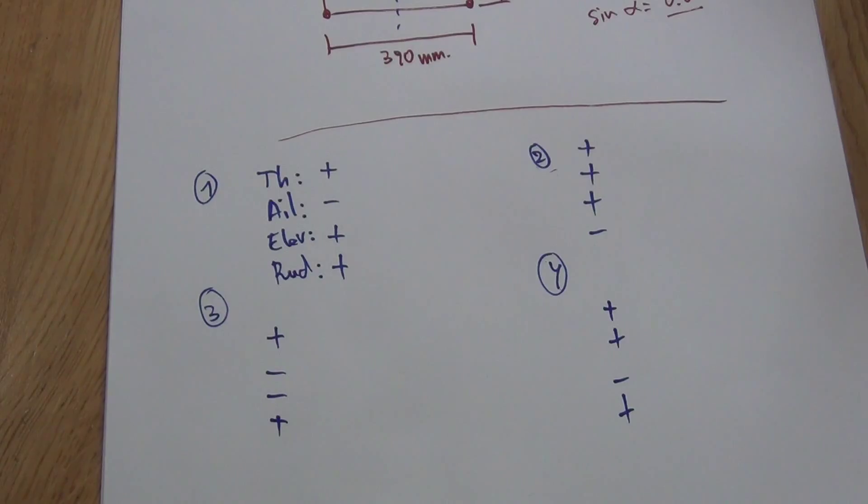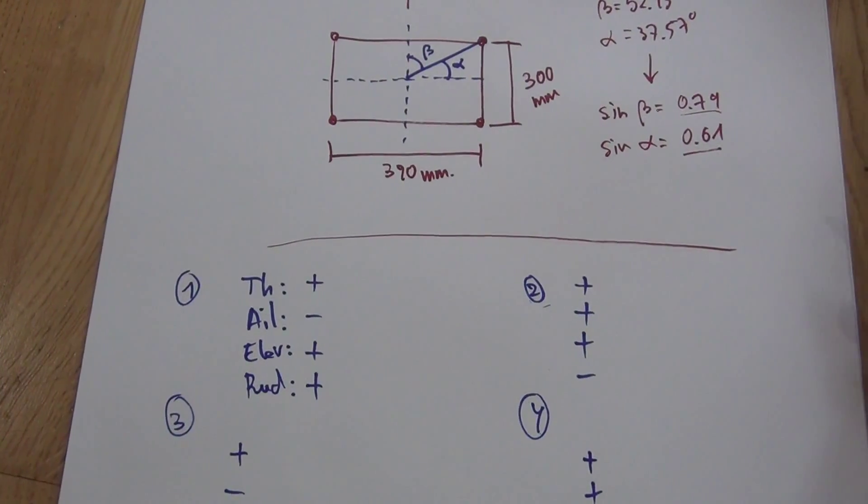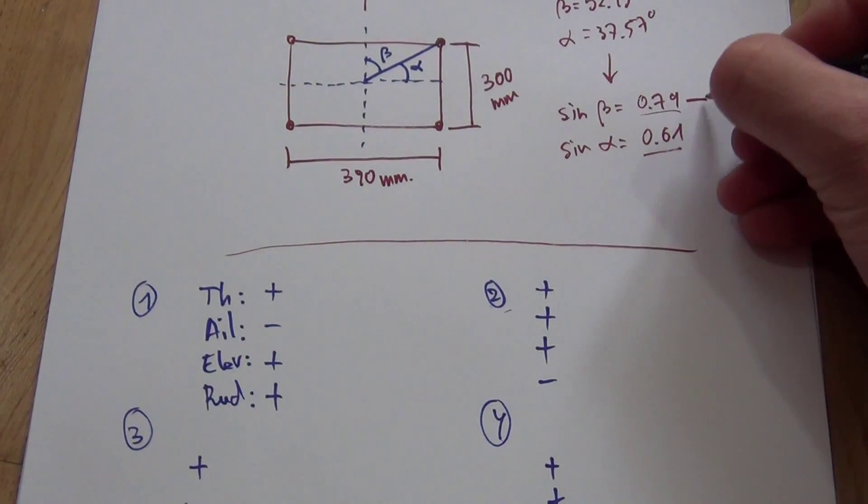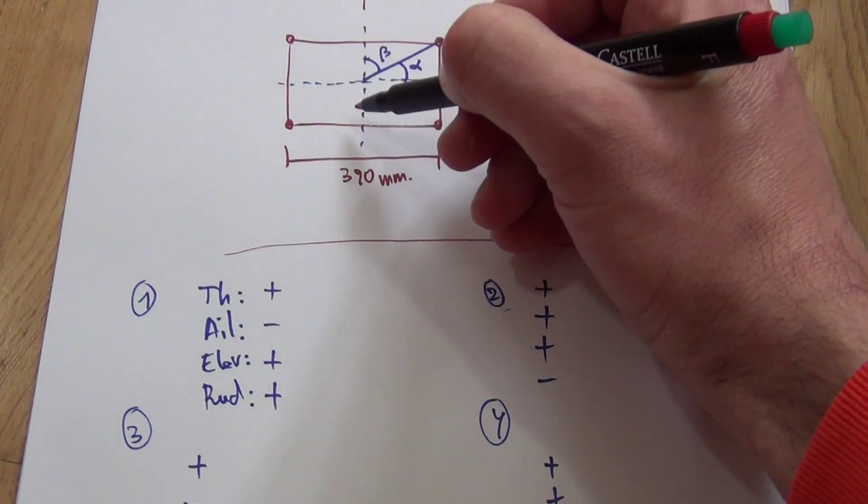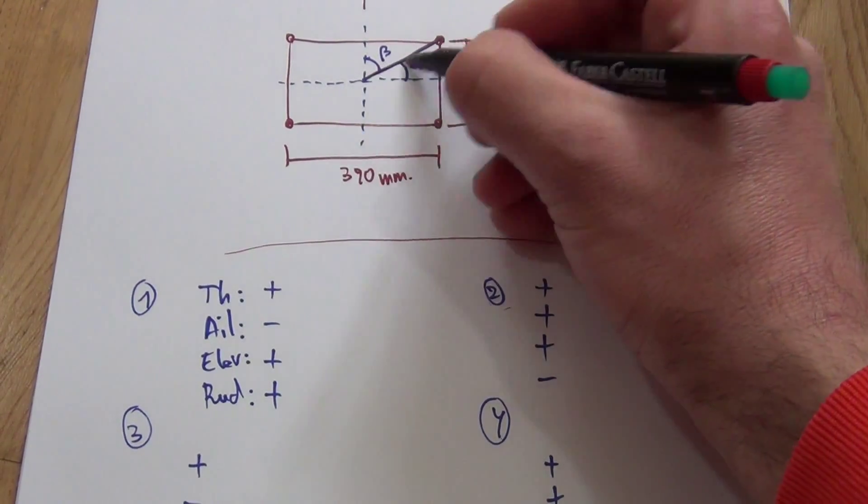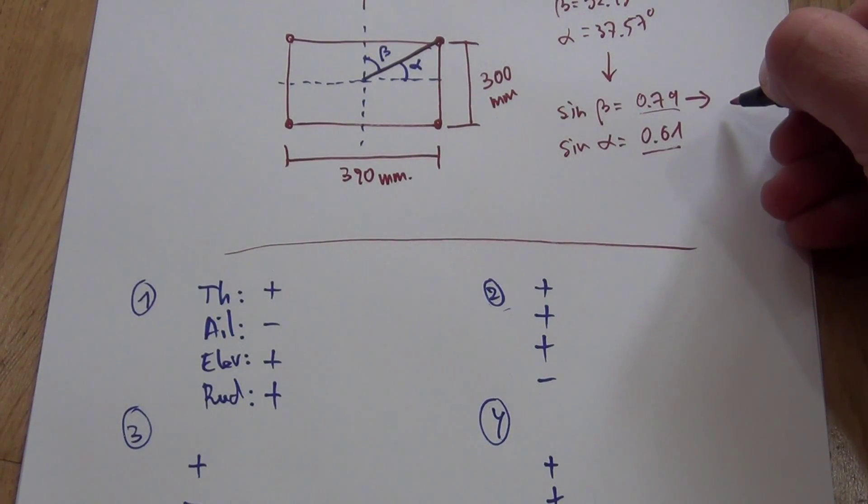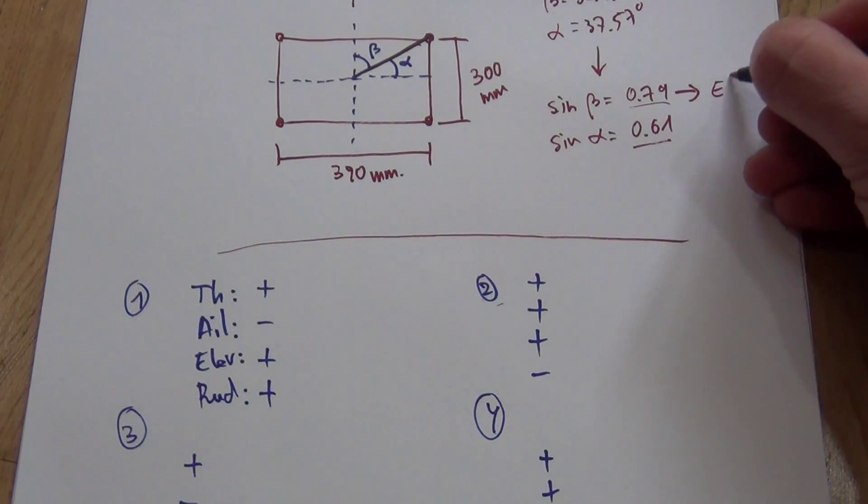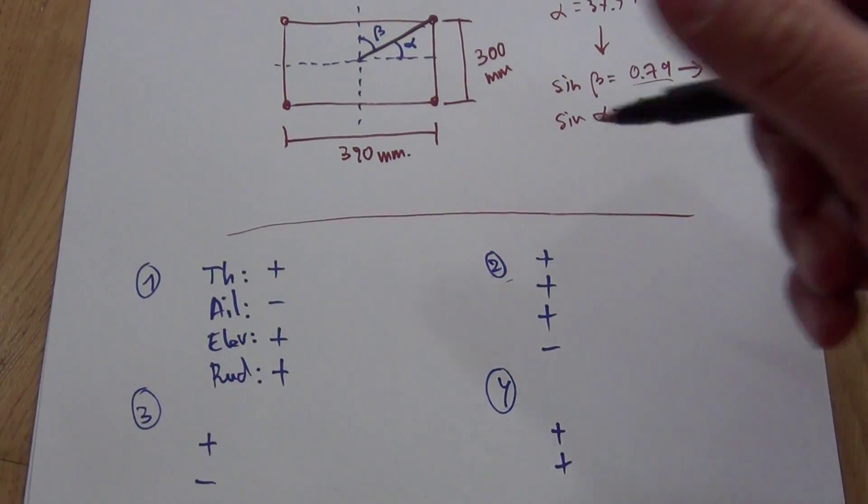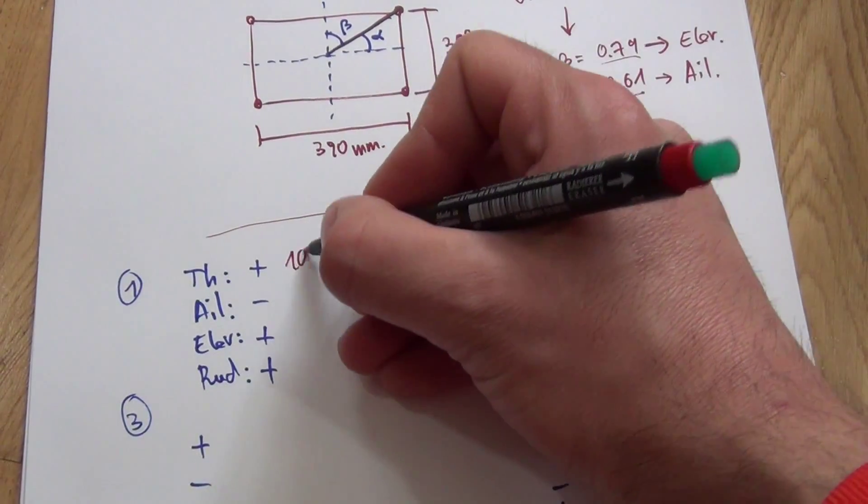And now the only thing you have to do is to plug in the proper values that we find out here. This angle corresponds actually, beta, from the forward direction to the line connecting the center and motor, this beta corresponds to the elevator, and this to the aileron. In our case, or usually actually, throttle and rudder you keep it at 100.